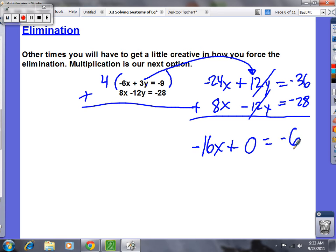Plus, this is the beautiful part, your y's cancel. Zero equals what's -36, -28? Negative 64. Okay, now solve for x. -16 times x, divide by -16. What's -64 divided by -16? X is 4.